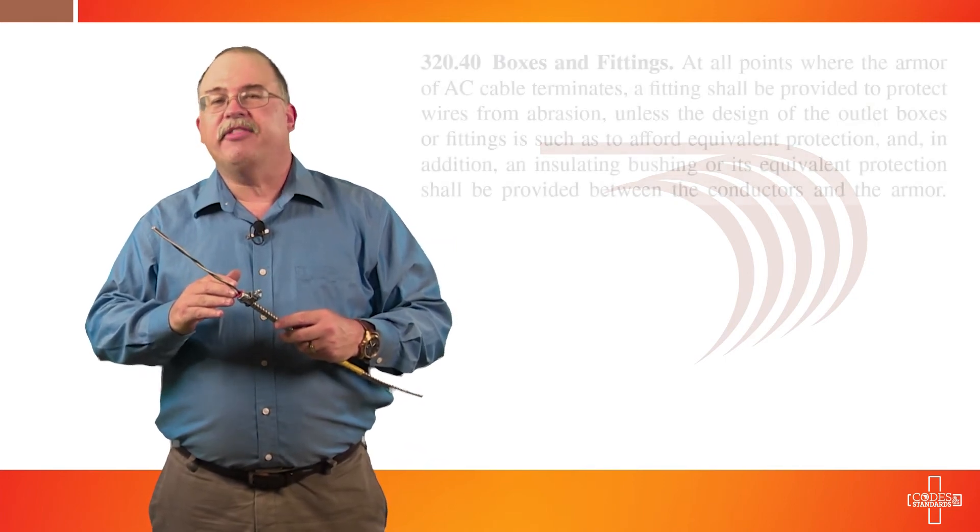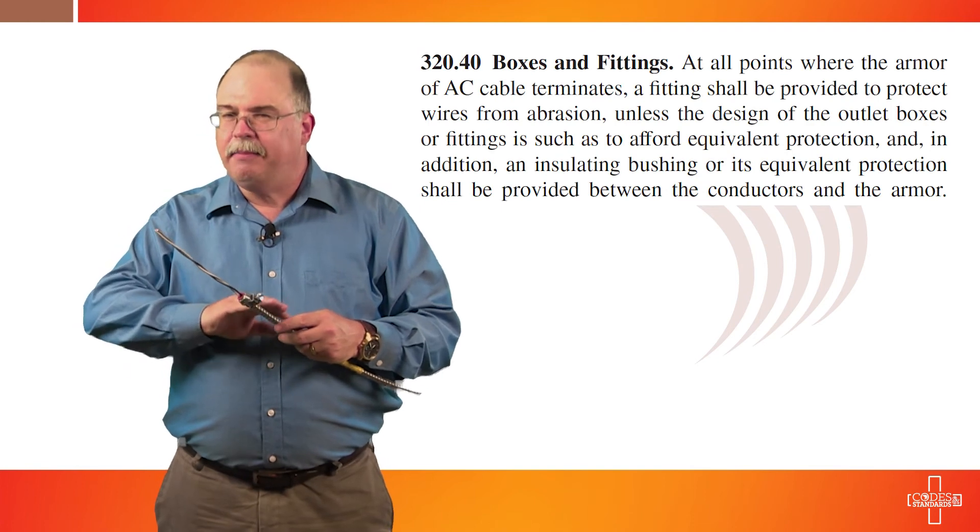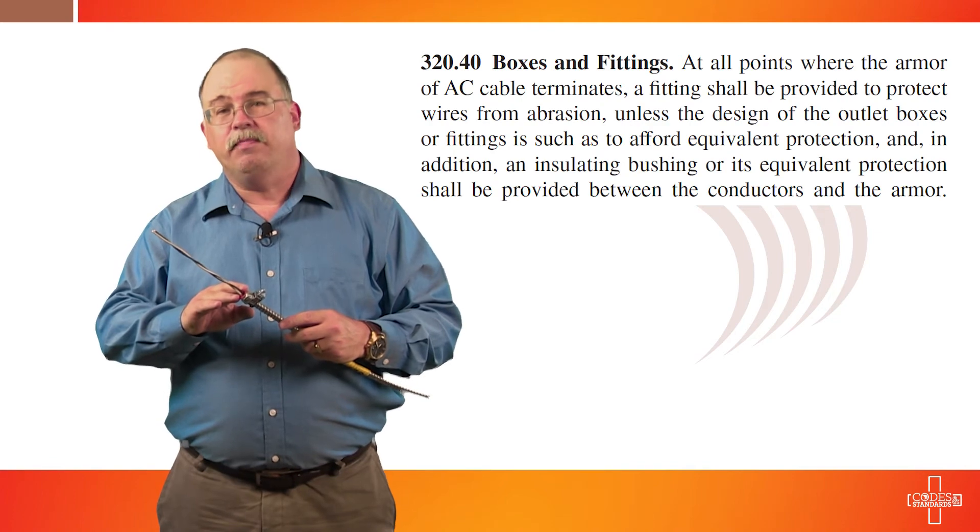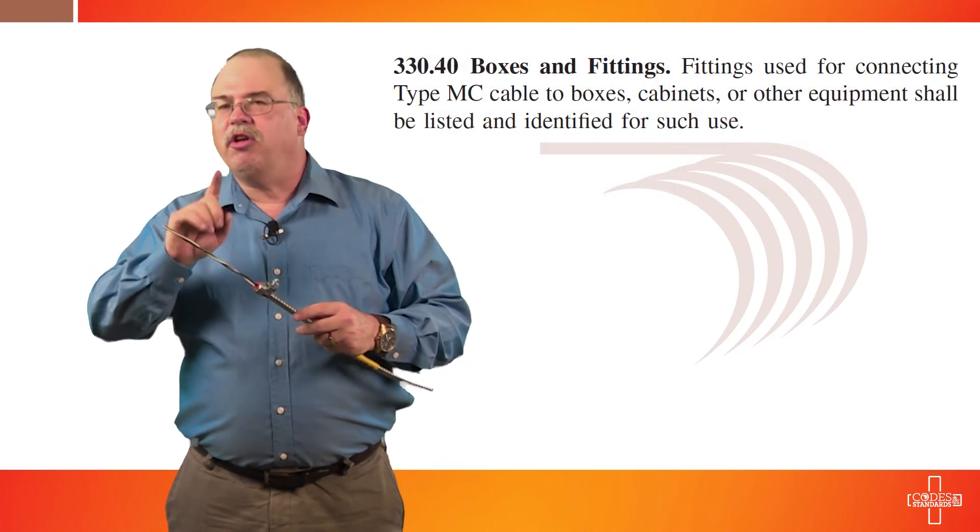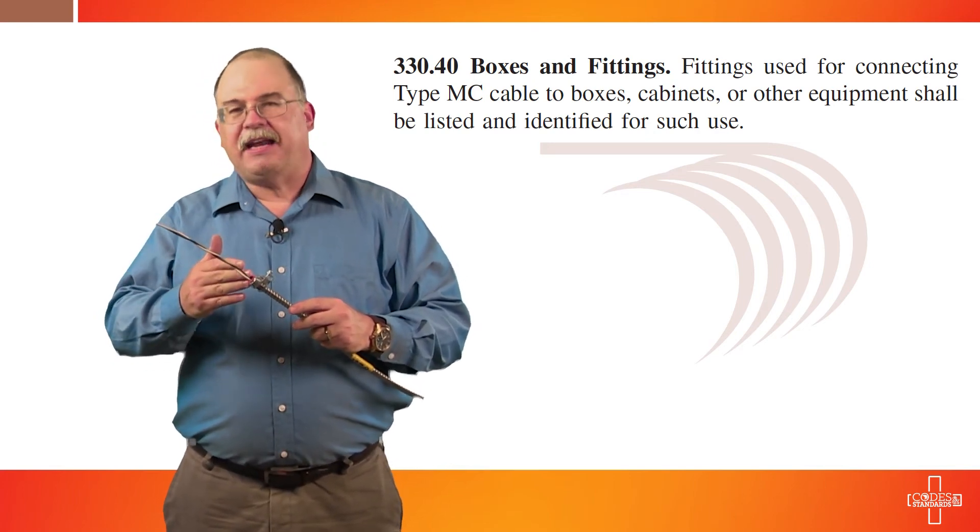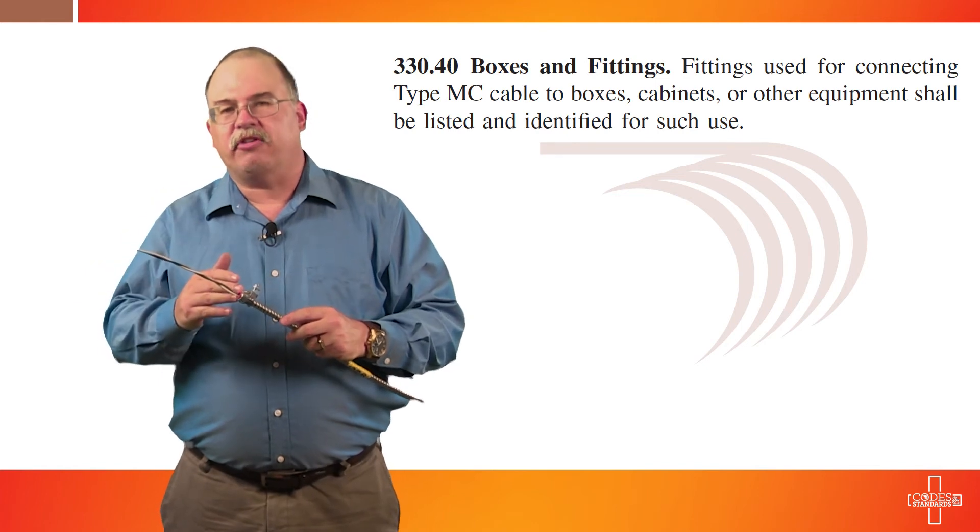Now, there's a couple interesting things to talk about when it comes to fittings. You'll notice in this fitting it has an anti-short bushing in the end. Well, as you know, type MC products do not require an anti-short bushing. Now, if I was dealing with a type AC or armored cable product, then I would need an anti-short bushing in accordance with section 320.40 of the National Electrical Code. But since this is a type MC product, we would look at section 330.40 of the National Electrical Code which deals with fittings and connectors. And you'll notice that it doesn't require any anti-short bushing on here. So, this product happens to have it integrated into the connector and that's perfectly fine.